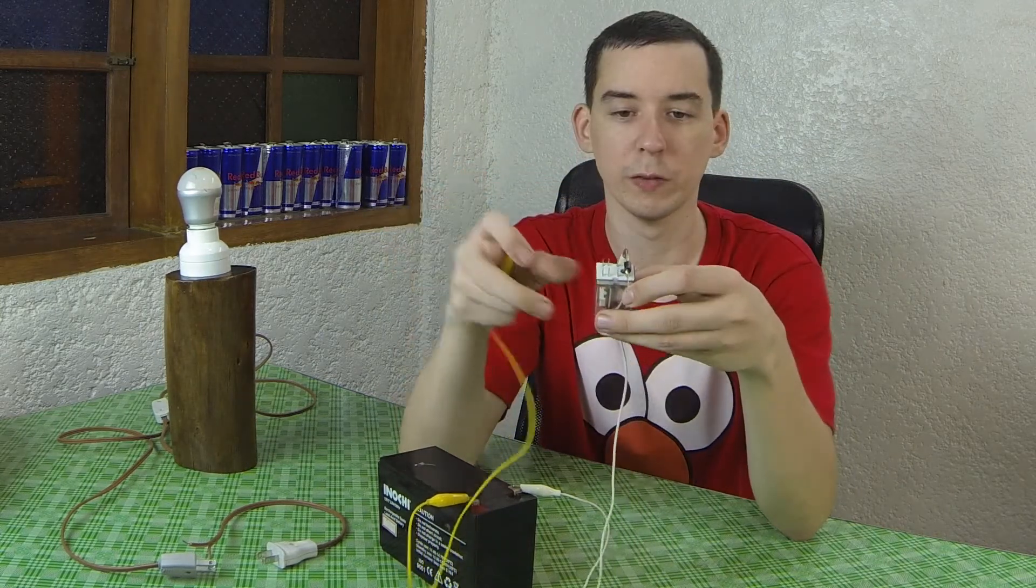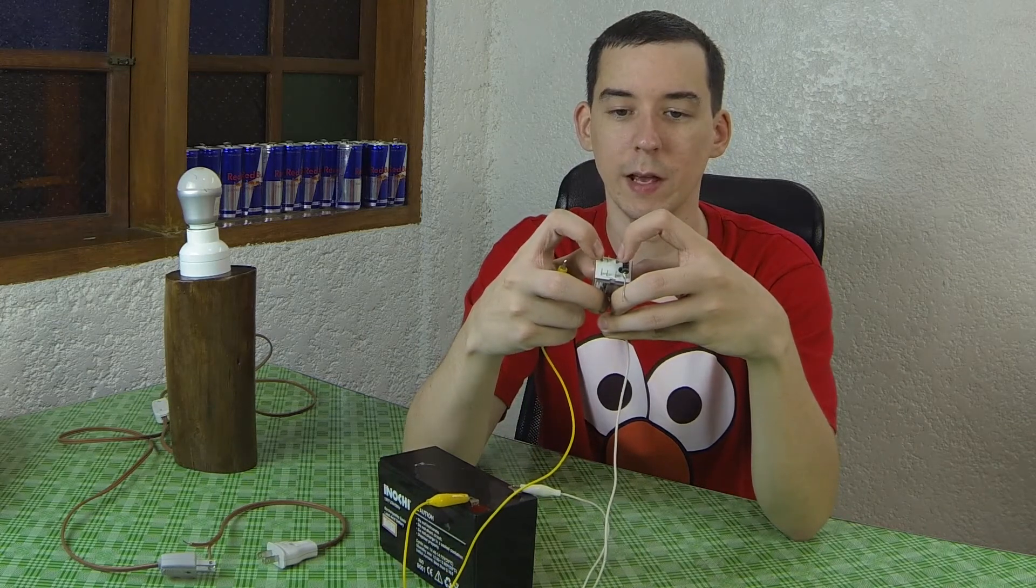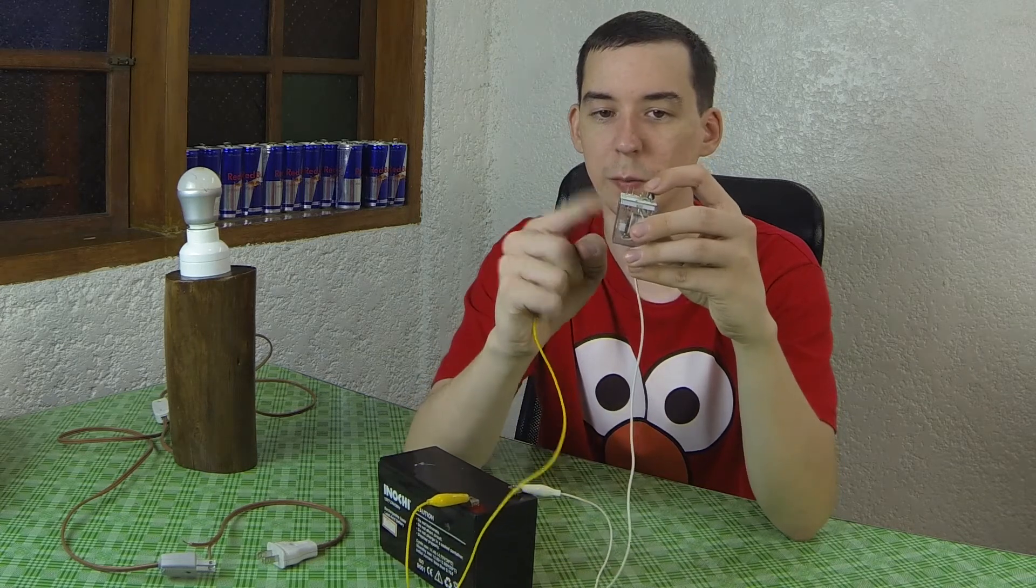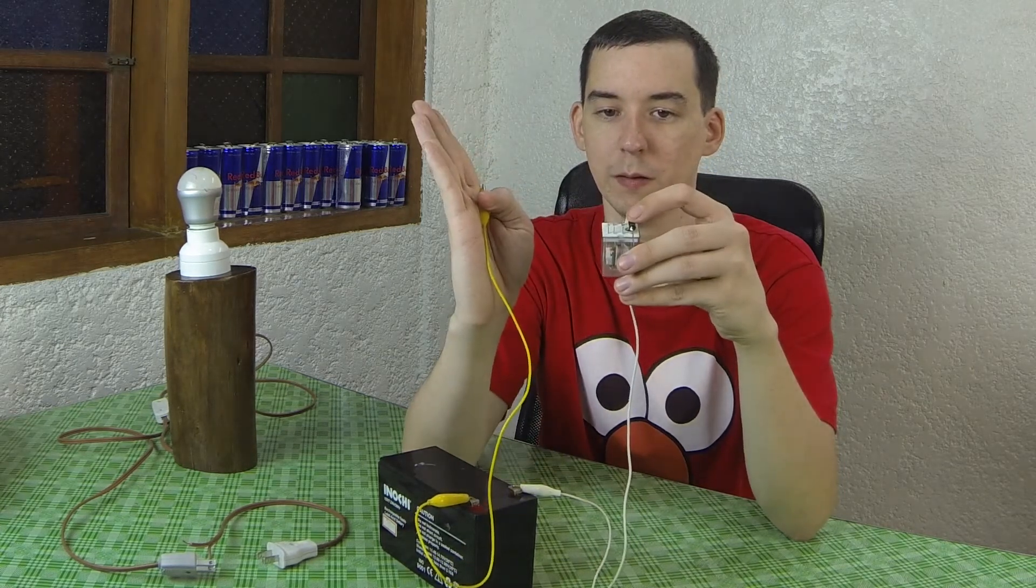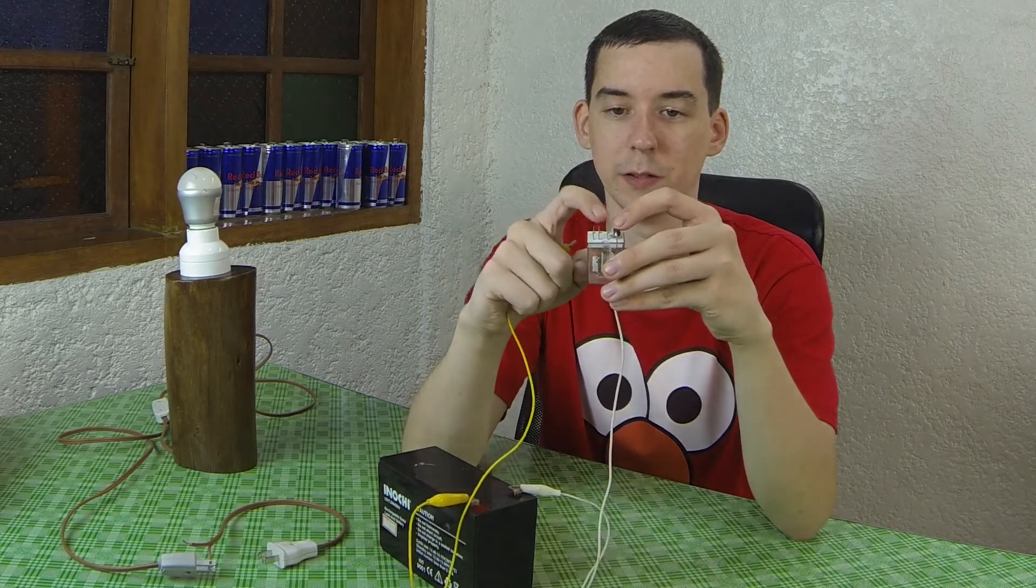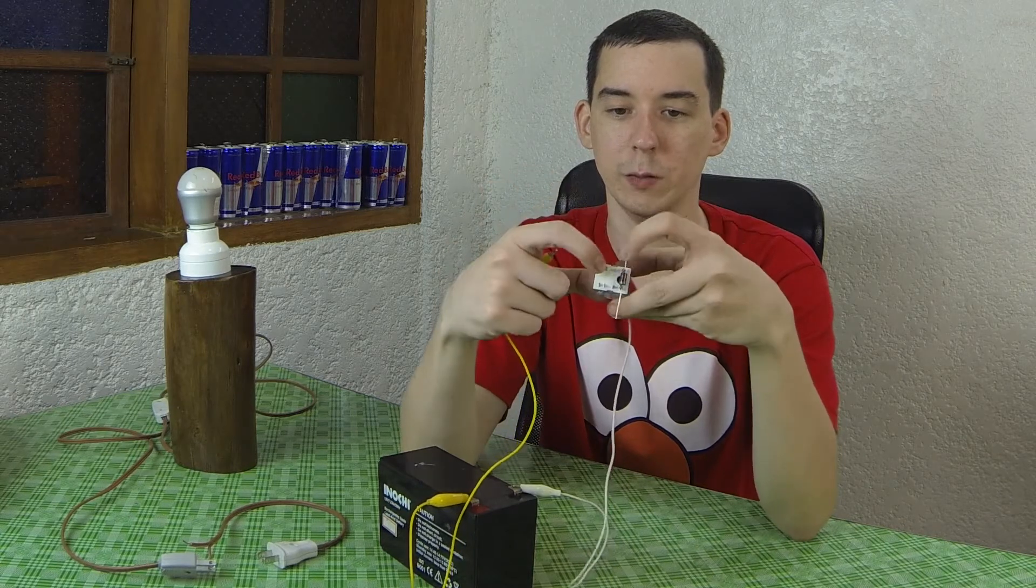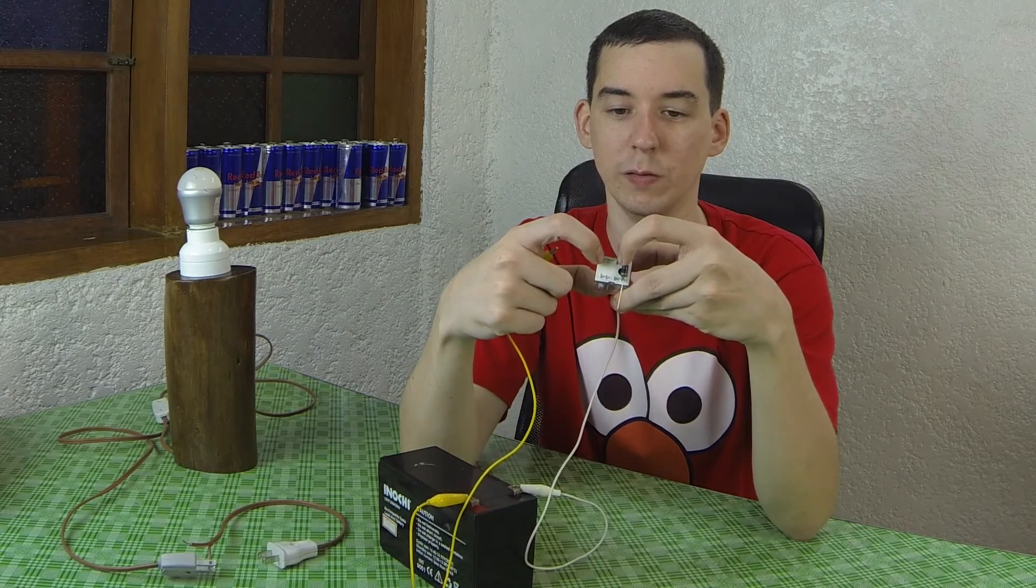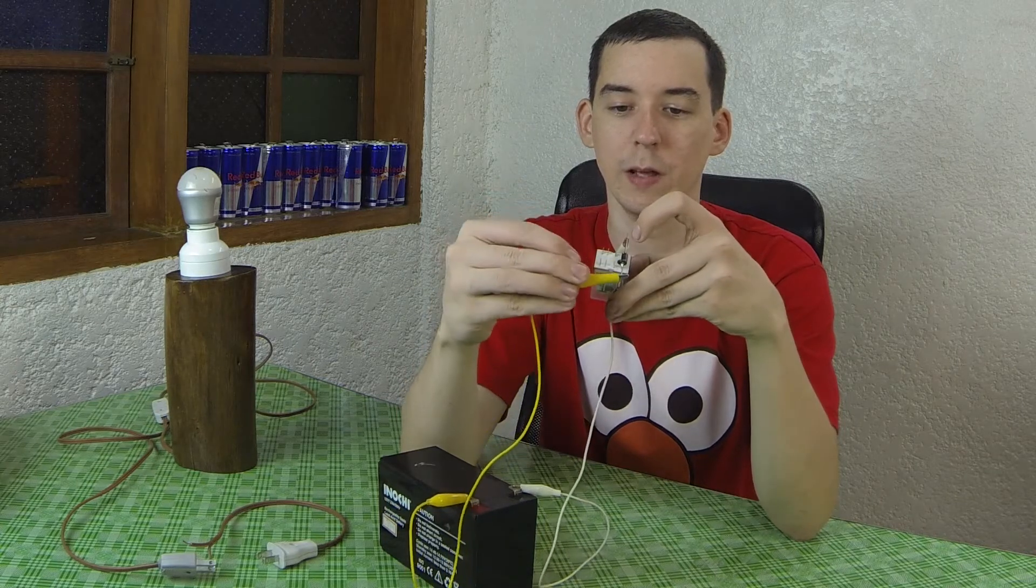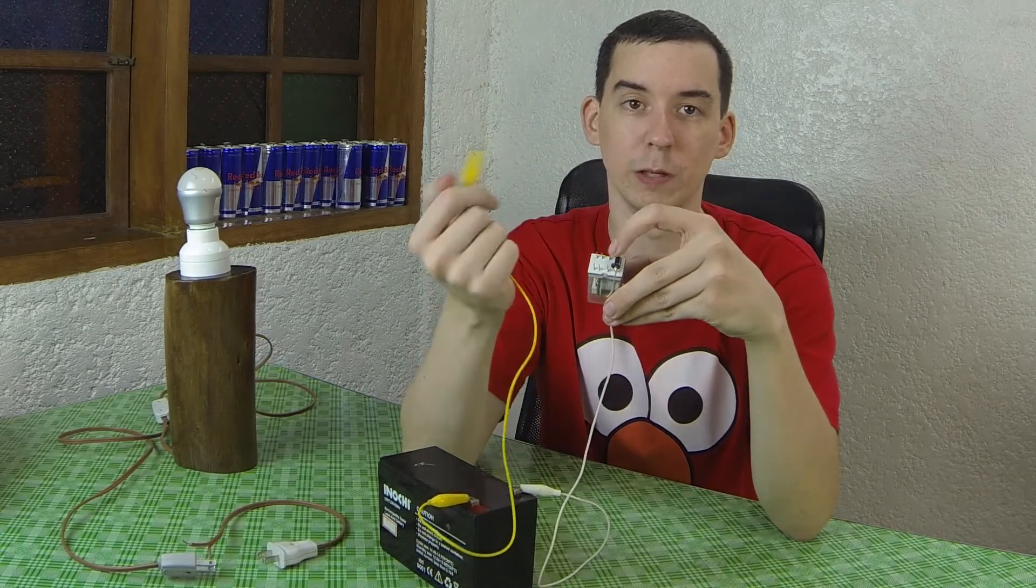So when no power is applied these two pins here are connected to each other and when power is applied these two pins are connected to each other because the little terminal inside comes from this pin and it flips over to this pin. So that's how you can basically make something turn on or off. If you want it on by default you would put it on these two pins. If you want it off by default you'd put it on these two pins and then when you apply the power it will flick the relay over and those two pins will be live.